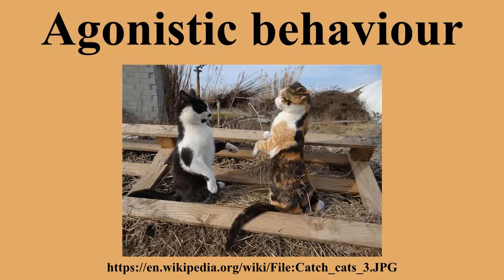Some forms of agonistic behavior are between contestants who are competing for access to the same resources, such as food or mates. Other times it involves tests of strength or threat displays that make animals look large and more physically fit, a display that may allow an animal to gain the resource before an actual battle takes place. Although agonistic behavior varies among species, agonistic interaction consists of three kinds of behaviors: threat, aggression, and submission. These three behaviors are functionally and physiologically interrelated with aggressive behavior yet fall outside the narrow definition of aggressive behavior.